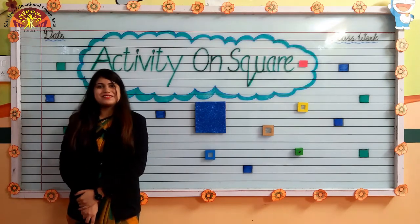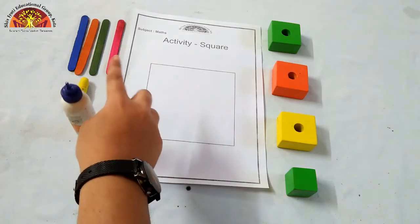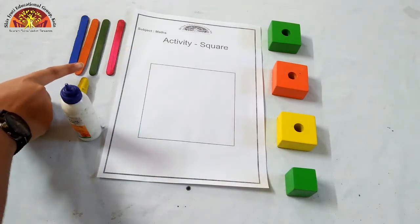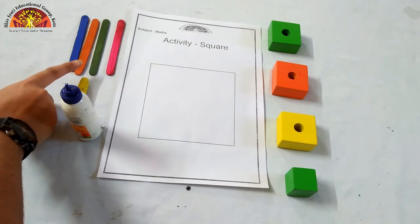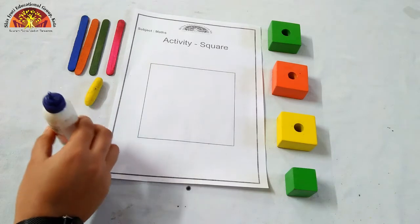Kids, let's start. Now we are doing an activity on square shape. For this activity, we need four equal size ice cream sticks. Kids, ice cream sticks should be colorful, clay and favicol.